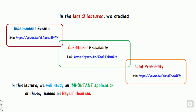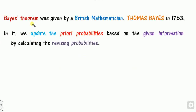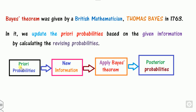What is Bayes' theorem? It was initially given by the British mathematician Thomas Bayes in 1763. He proposed that you update prior probabilities based on some given information and then calculate the reverse probability. The meaning is: if you have some prior probabilities — that is, some probabilities about events given to you in advance —